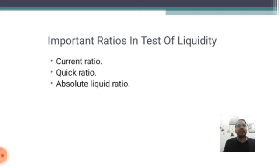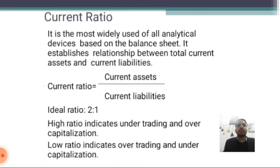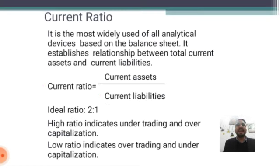Important ratios in the test of liquidity: first, current ratio; second, quick ratio; and third, absolute ratio. Current ratio is the most widely used analytical device based on the balance sheet. It establishes the relationship between total current assets and current liabilities. Current ratio equals current assets divided by current liabilities. The ideal ratio is 2:1. A high ratio indicates under-trading and over-capitalization, while a low ratio indicates over-trading and under-capitalization.